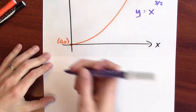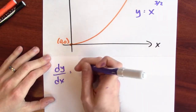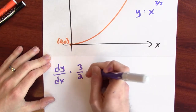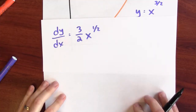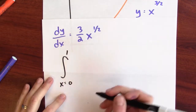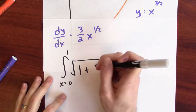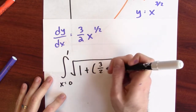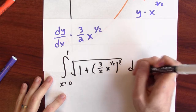We'll start by differentiating. So dy/dx is 3 halves x to the 1 half power. We'll put that derivative into the formula for arc length. So I'm going to be integrating as x goes from 0 to 1, the square root of 1 plus this derivative squared — so 1 plus (3 halves x to the 1 half) squared, dx.